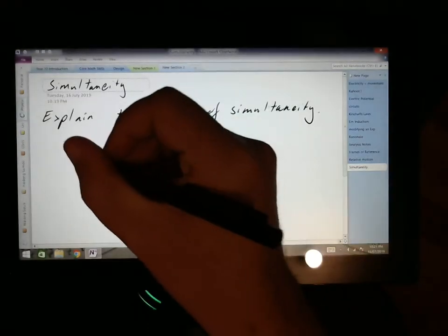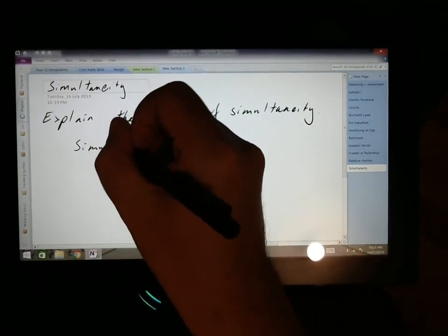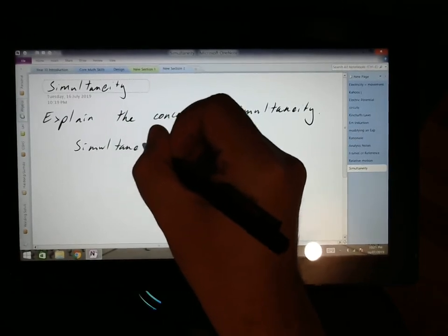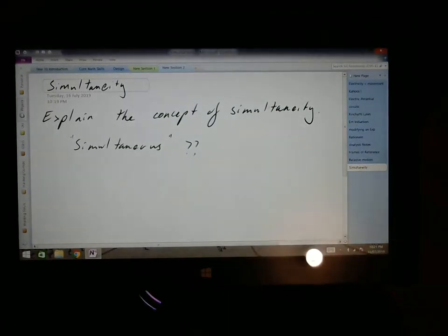So, with simultaneity, we ask the question, what does it mean to be simultaneous? So, this is a word we should be able to define, we should be able to describe, and then we should be able to explain it using those three levels of cognitive verbs.